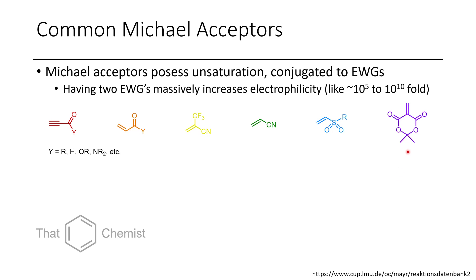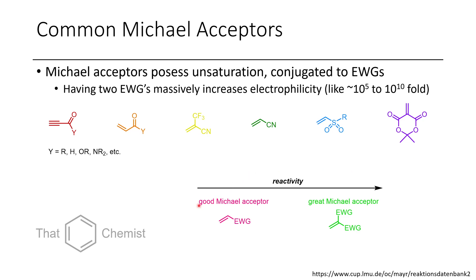If you're curious about how you can use these as an intermediate instead of just using a carbonyl compound, there's something called the acetoacetic acid synthesis or diethyl malonate / malonic ester synthesis, where you can have a carbonyl present and then decarboxylate in a subsequent step. In general, if you have a good Michael acceptor, it'll have an electron withdrawing group conjugated with a double or triple bond, but if you have two electron withdrawing groups, this makes it a much, much better electrophile.